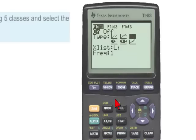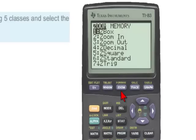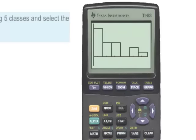To graph a histogram, we'll hit the zoom 9 buttons. And here we have a histogram drawn by the calculator from the data. And you'll notice that it has six classes.